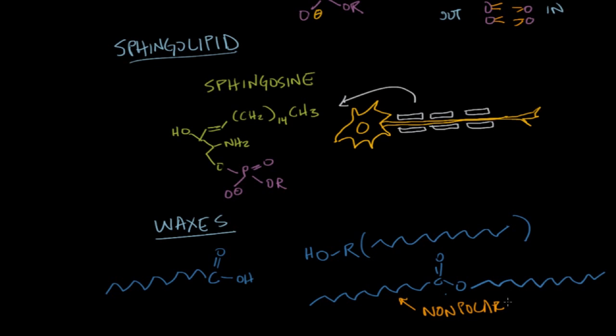And these two nonpolar sections make the molecules very hydrophobic. Waxes are very hydrophobic. And so we see waxes in nature often forming a real barrier against water. This happens in leaves. We put waxes on our cars to protect the surface from rain and humidity. But waxes are another type of hydrolyzable lipid.